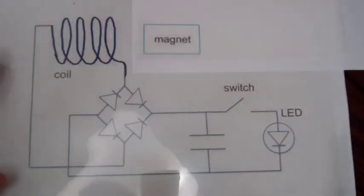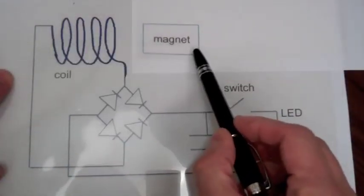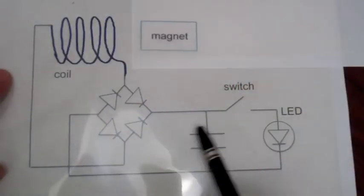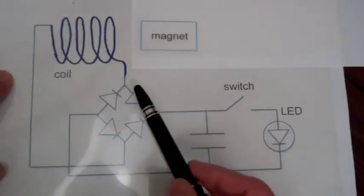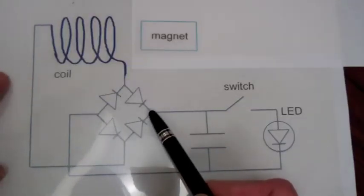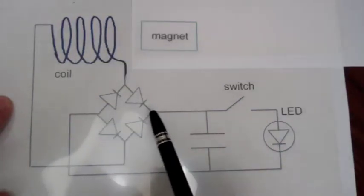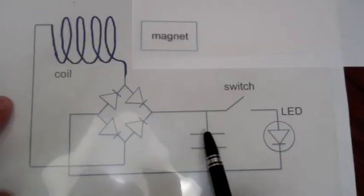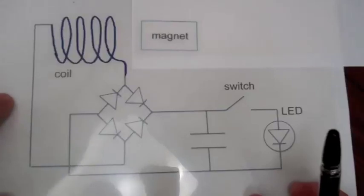Here's a schematic of our Faraday flashlight. Here's our coil, here's the sliding magnet, this is the capacitor that's going to be charged, here's our light emitting diode, and this arrangement of diodes will ensure that no matter what direction the current is flowing through the coil, the current is going to be flowing onto the top plate, so that the top plate will become positively charged and the bottom plate negatively charged.